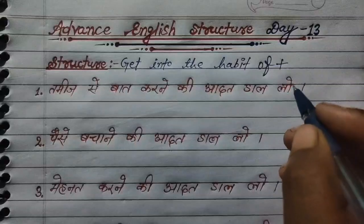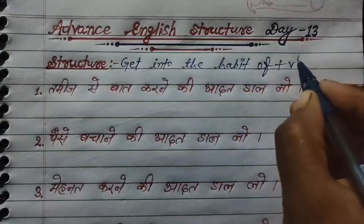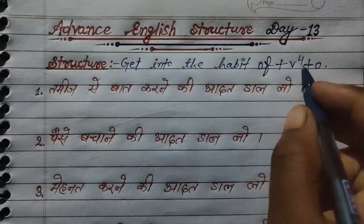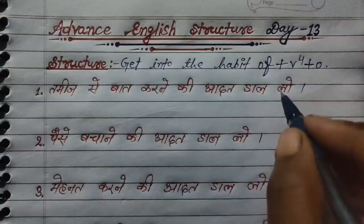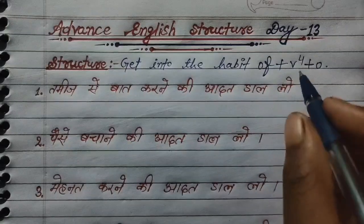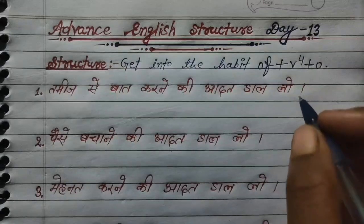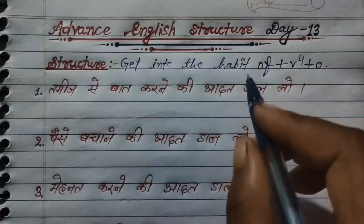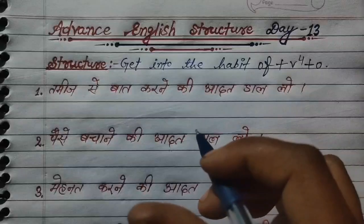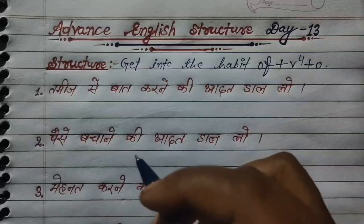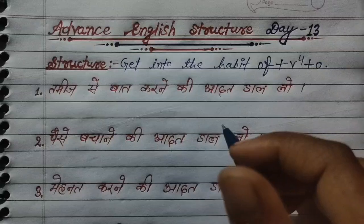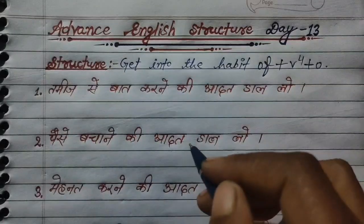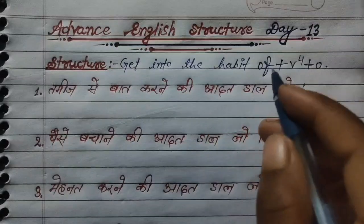उसमें verb की fourth form की यूज़ करनी है — verb की fourth form plus object. GET INTO THE HABIT OF plus verb की fourth form plus object. Verb की fourth form का मतलब है verb की first form में ing लगाना है। I hope कि आपको structure समझ में आ गया होगा। इसी structure की base पर इन सारे sentences को solve करेंगे, बनाएंगे। जब भी किसी कार्य को करने की आदत डाल लो — यह बोलनी हो तो आप इसी structure को use करेंगे। GET INTO THE HABIT OF, उसके बाद verb की fourth form plus object।